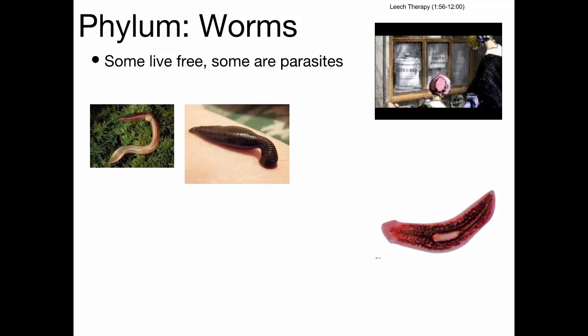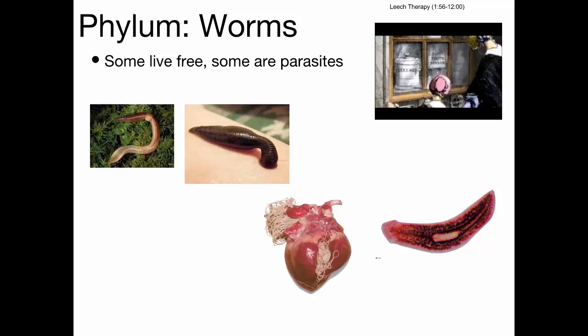The planaria we saw is a flatworm that can regenerate. Heartworm is a parasitic worm that gets into a dog's circulatory system, living off blood. As it grows and reproduces it becomes so numerous it can clog the heart and stop it from functioning properly — it can kill an animal. Dogs are given preventive medication like HeartGard every few months to prevent this.